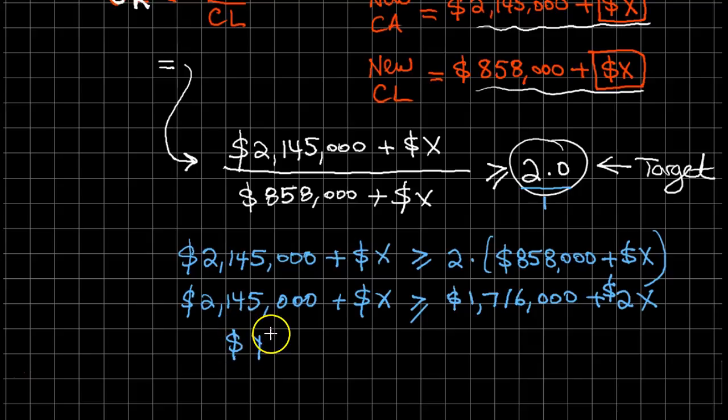That should be greater than or equal to two X minus X, which is just X. I hope I'm not wrong. Let me check that calculation at the last step. That should be greater than or equal to X.